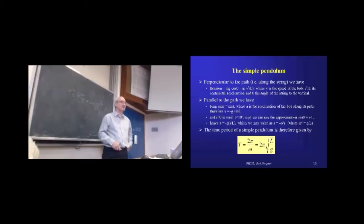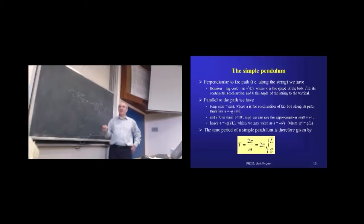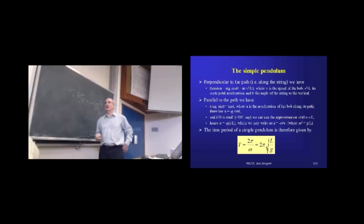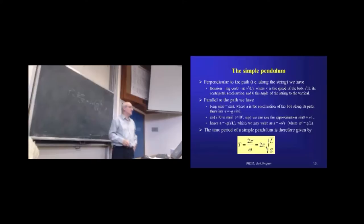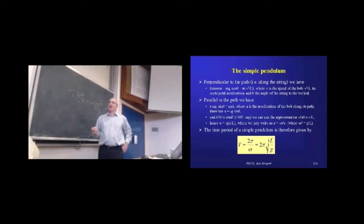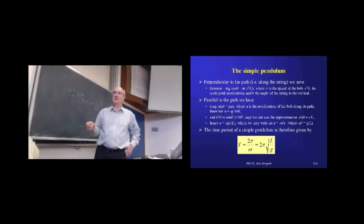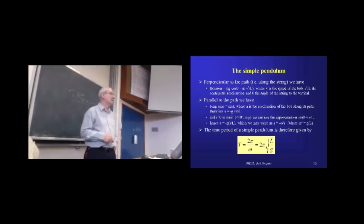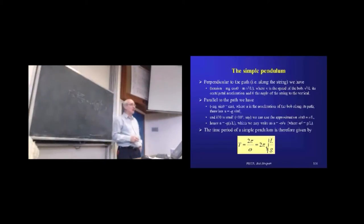We can write this in the form of our master equation for simple harmonic motion, where the angular frequency squared is given by G over L. So we have a very straightforward equation for the time period of the pendulum's swing: T equals 2π times the square root of L over G.